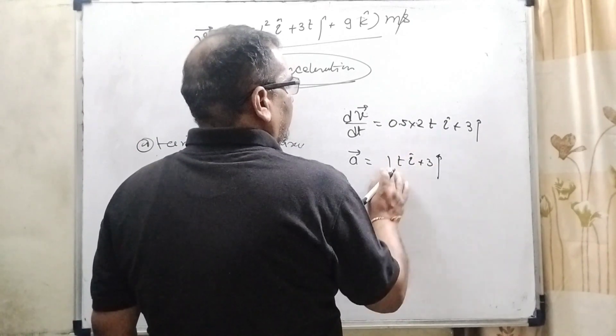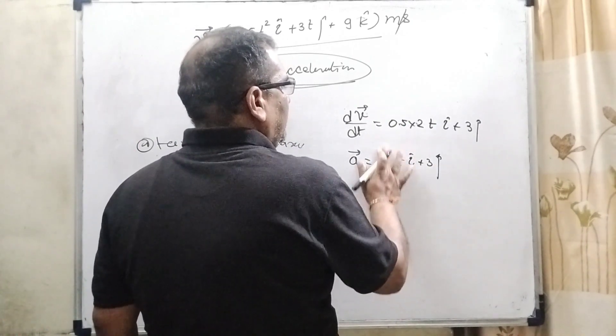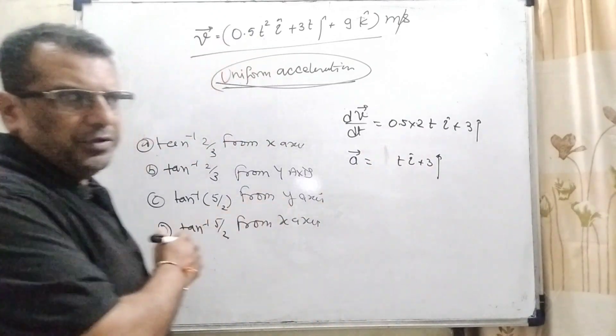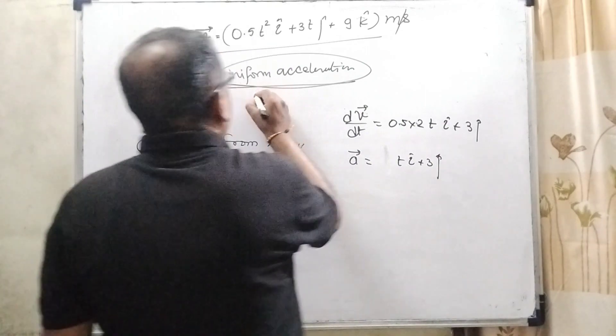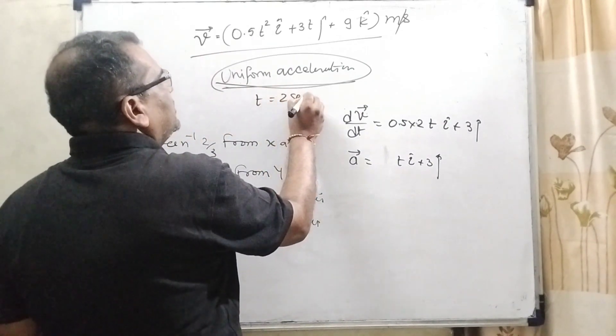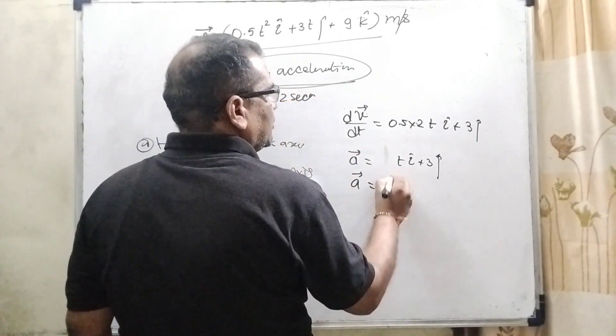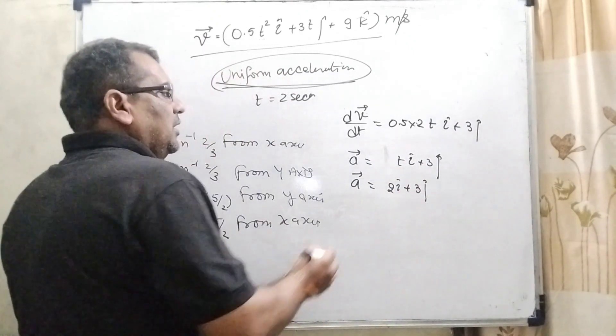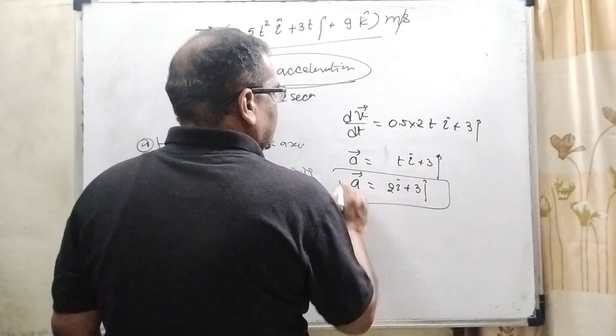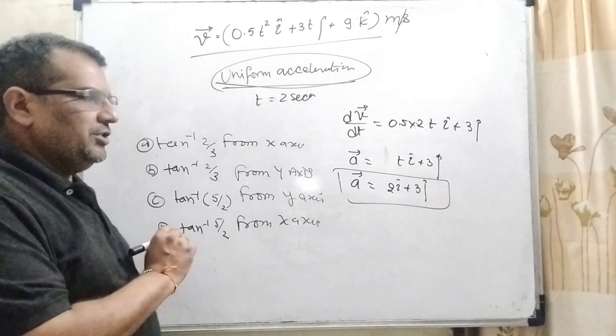Here we can remove this one because it is understood 1 into t that is t. But in this case we have given that time equal to 2 seconds. So here acceleration equals to 2i plus 3j.